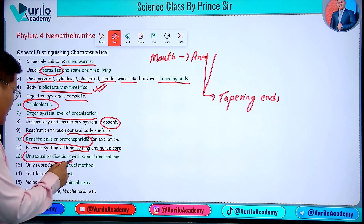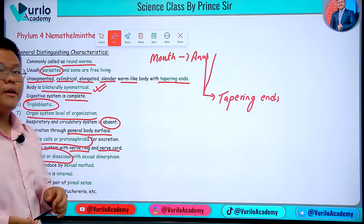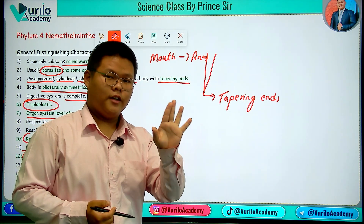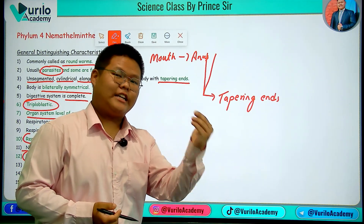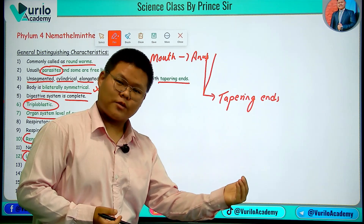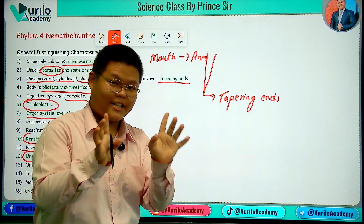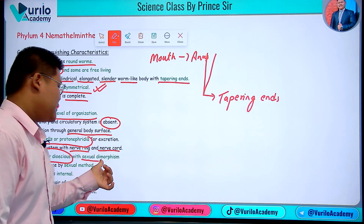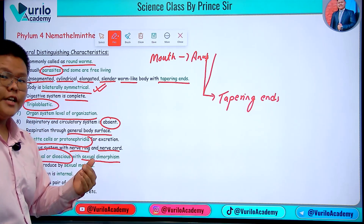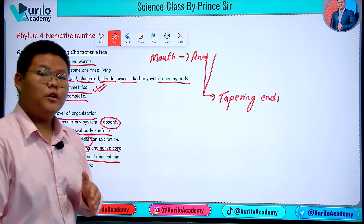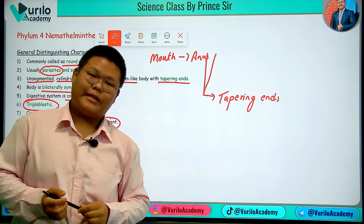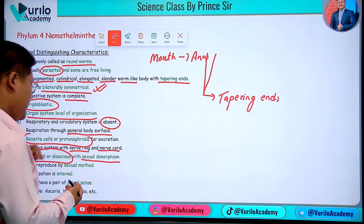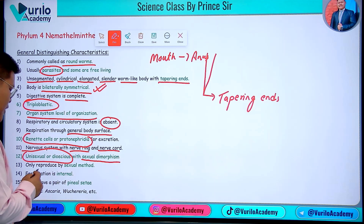They are unisexual and dioecious, meaning male and female are separate. This is called sexual dimorphism — males and females can be easily identified.